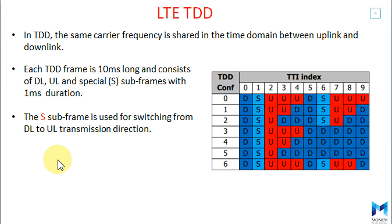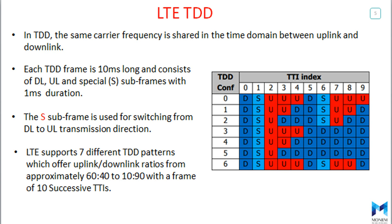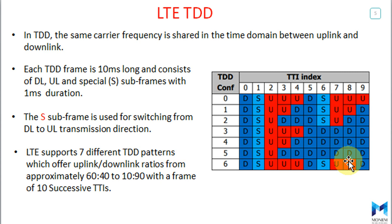Each TDD frame is 10 milliseconds long and consists of downlink, uplink, and special subframes with one millisecond duration. The S subframe is used for switching from downlink to uplink transmission direction. LTE supports seven different TDD patterns which offer uplink and downlink ratios from approximately 60/40 up to 10/90, within a frame of 10 successive TTIs.